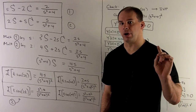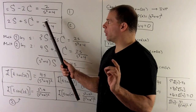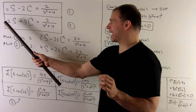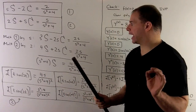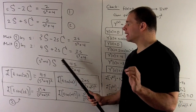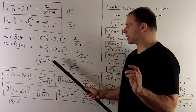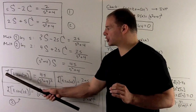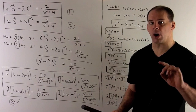We treat little s as just another number, so we now have two equations and two unknowns. We multiply equation 1 by s and equation 2 by 2, then add them so capital C cancels. What's left is (s² + 4)·S = 4s/(s² + 4). Dividing by (s² + 4) isolates capital S. So the Laplace transform of t·sin(2t) equals 4s/(s² + 4)².